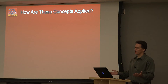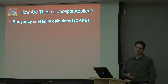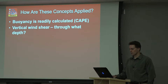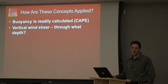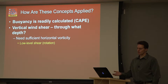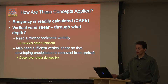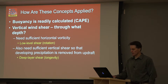So how do we apply this? We can calculate buoyancy from soundings — these can be numerical soundings from a model, essentially a forecast, or observed soundings with weather balloons. For vertical wind shear, the real question is what do we mean by that? How do we quantify it, what depth, what calculations? We need sufficient horizontal vorticity to be tilted and stretched, so we look at low-level shear to give us some indication of mid-level rotation potential. We also need enough vertical shear through a deep enough layer so that precipitation is transported away from the updraft, giving us a longer-lived storm that doesn't collapse on itself before we establish the supercell process.